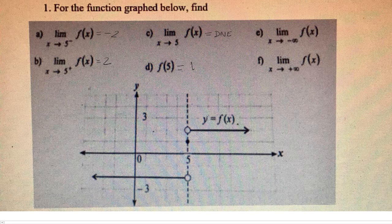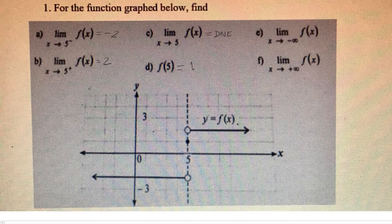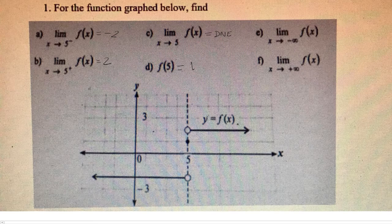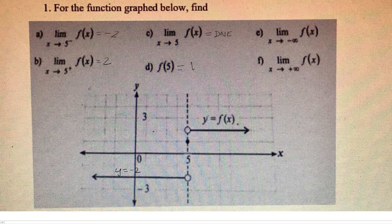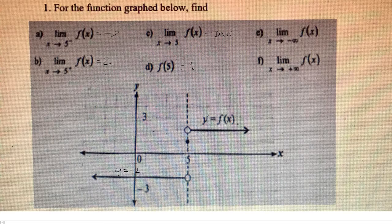Now the limit as x approaches negative infinity of f of x, we have to go all the way to the left, because that's where we get closer and closer to negative infinity. So as you can see over here, this is the line y equals negative 2. And so as x approaches negative infinity, we're still going to be on this line y equals negative 2. So our limit is at negative 2.